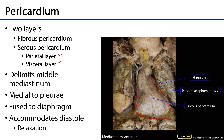The pericardium as a unit is very helpful for navigating the mediastinum because its borders define the middle mediastinum. Anything anterior to it is the anterior mediastinum; anything posterior to it is the posterior mediastinum. It falls within the mediastinal space, medial to the pleura, and is fused to the central tendon of the diaphragm.